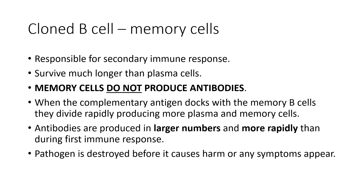Once again: memory cells do not produce antibodies. Memory B cells are only responsible for mitosis and producing new plasma cells. It is these new plasma cells that produce antibodies — in much larger numbers and much more rapidly than before. In some instances they're produced so quickly that you don't even show any symptoms of the disease.